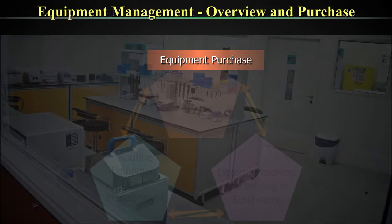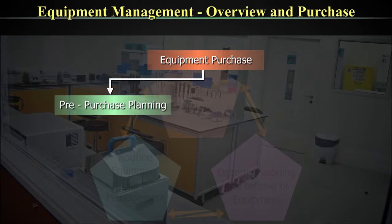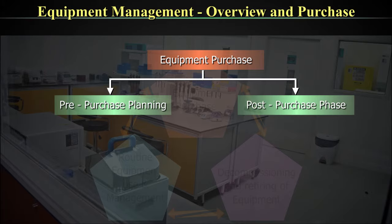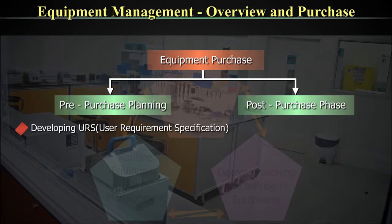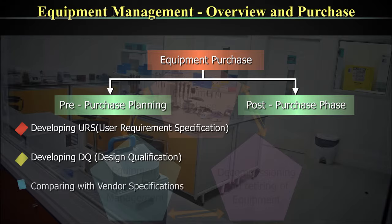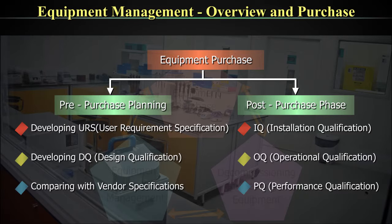Let's first look at equipment purchase. The overview of equipment purchase covers a pre-purchase planning phase and a post-purchase phase, to be discussed in detail later. Pre-purchase planning involves development of a URS or user requirement specification, and a DQ or design qualification, as well as comparing with vendor specifications. In the post-purchase phase, there are IQ, OQ, and PQ — which stand for installation qualification, operational qualification, and performance qualification.